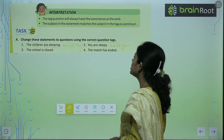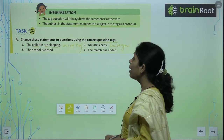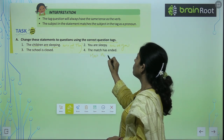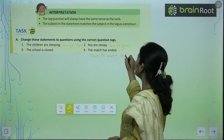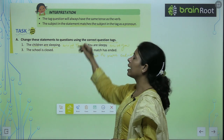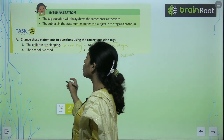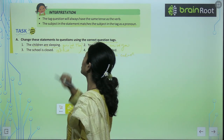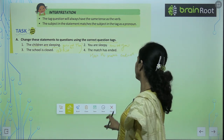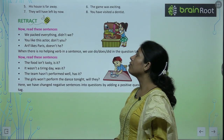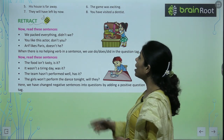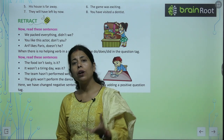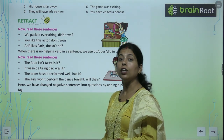The match has ended — hasn't it? The school is close — isn't it? His house is far away — isn't it? तो आपको ऐसे ही करना है: आपका जो भी verb है उसमें not लगा के और pronoun लगा के उसको question tag में change कर सकते हैं।